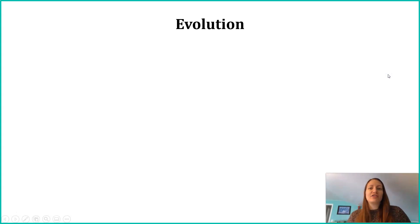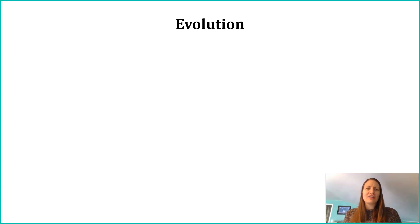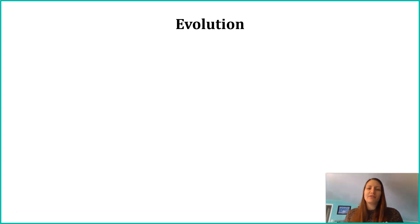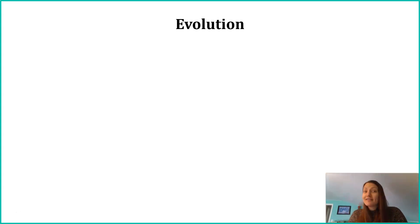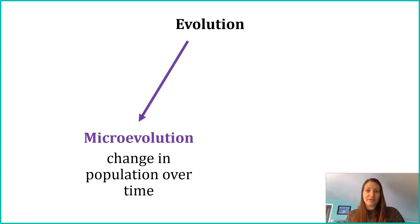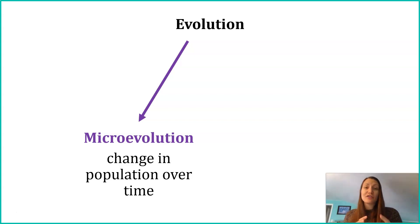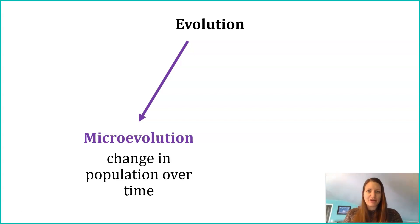Evolution is defined as a change in the genetic variation in a population over time. When most people think of evolution, they think of speciation — the evolution of organisms into new species — and that's definitely one branch of evolution. But the branch we're exploring today is microevolution, which looks at a single population and how the genetics are changing within it.